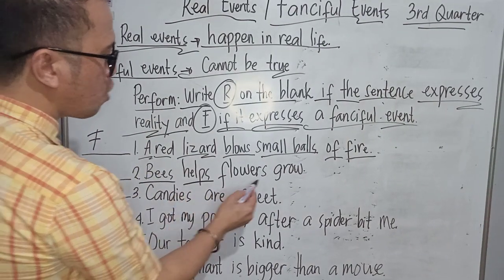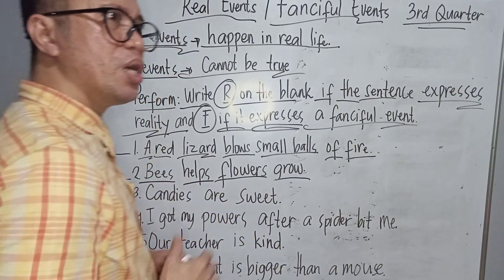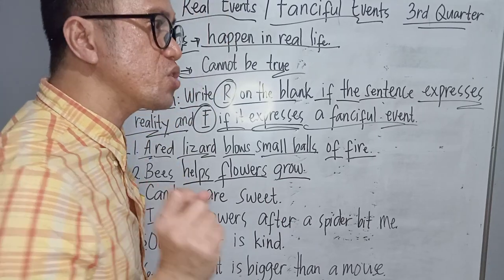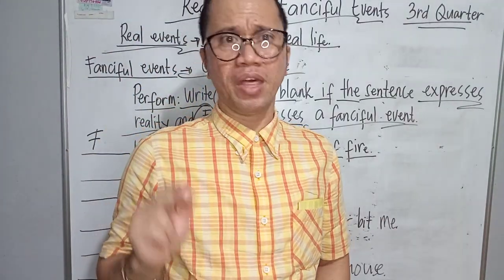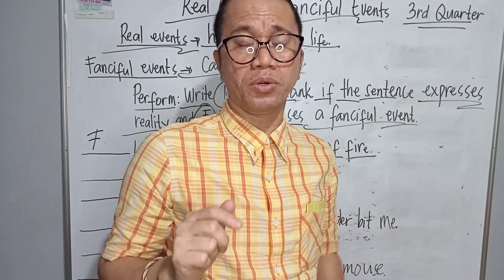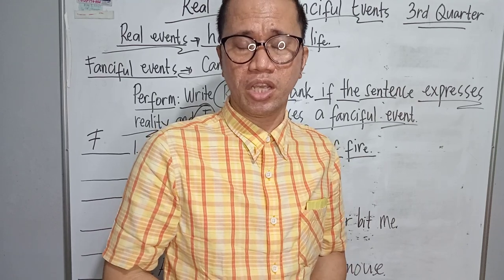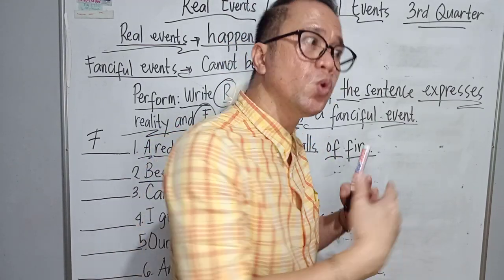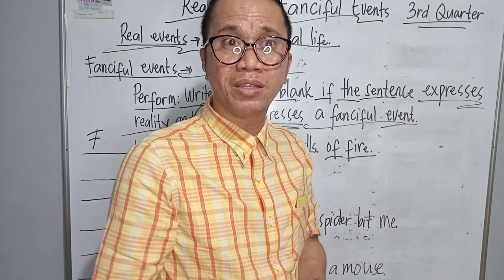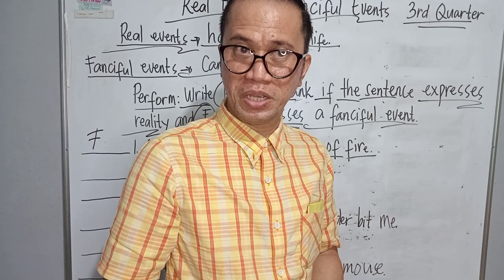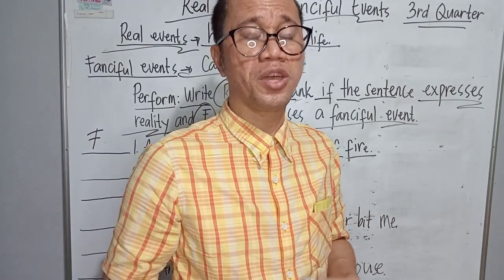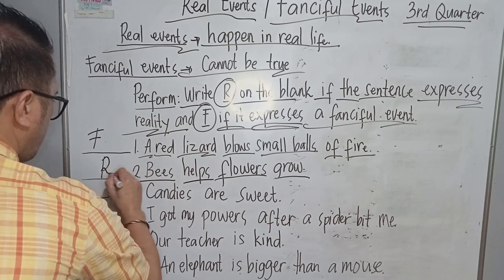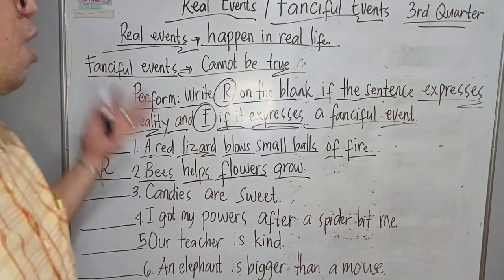Number two: Bees help flowers grow. Remember from our Science subject that bees are pollinators. They pollinate flowers, transferring pollen from one flower to another, which helps create the great color of flowers. That is the role of a bee. So this was based on truth — there is a basis. We are going to write letter R, because this shows real events.